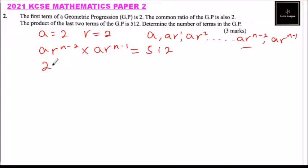We replace r with 2, then we have 2^(n-2) multiplied by 2 multiplied by 2^(n-1) equals 512. If you factorize, it is the same as 2 to power 9.